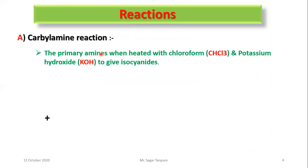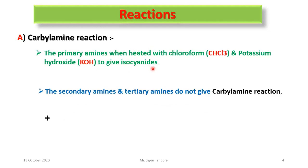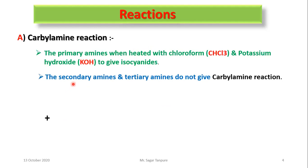When primary amine reacts with chloroform and potassium hydroxide in the presence of heating conditions, it gives isocyanide. Secondary amine and tertiary amine do not give the carbylamine test. This reaction only gives a positive result with primary amine, and it can distinguish primary amine from secondary and tertiary amine.